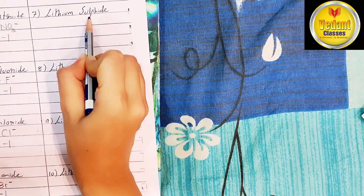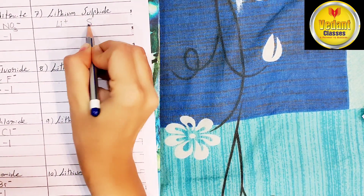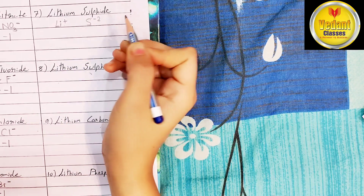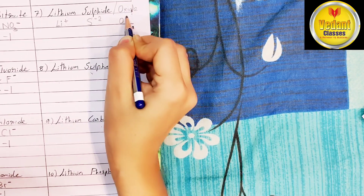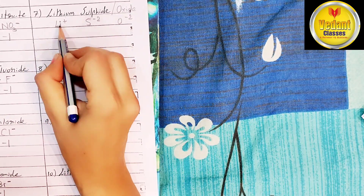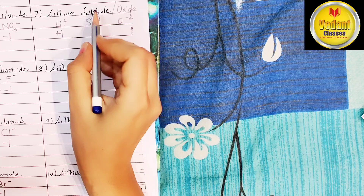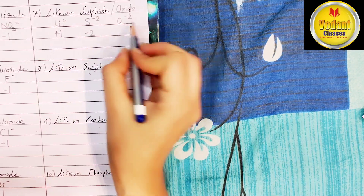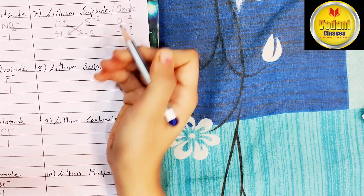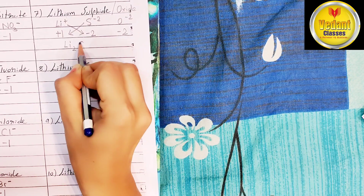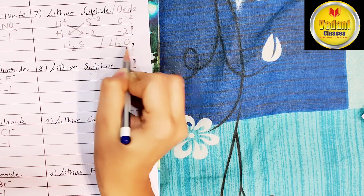Lithium sulfide and lithium oxide: sulfide ion is S2-, oxide ion is O2-. Valency of lithium ion is plus 1, valency of sulfide ion is minus 2, oxide ion is also minus 2. Now cross the valency. Compounds will be Li2S — lithium sulfide, and Li2O — lithium oxide.